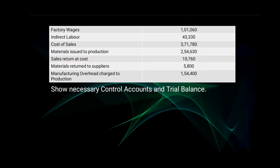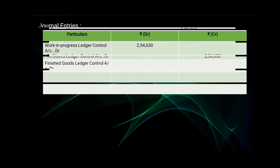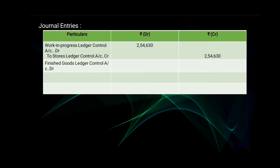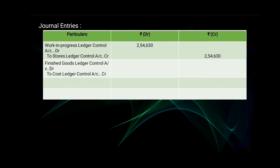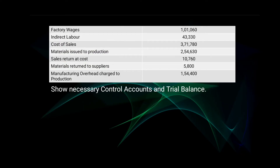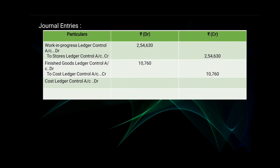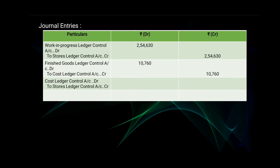Next, sales return at cost; the amount is given as 10,760. The journal entry is: Finished Goods Ledger Control Account debit, to Cost Ledger Control Account — amount 10,760. Next, materials return to suppliers; the amount is 5,800. The journal entry will be: Cost Ledger Control Account debit, to Stores Ledger Control Account — amount 5,800 on the debit and on the credit side.